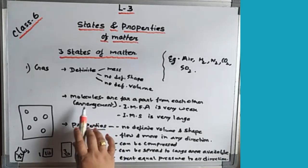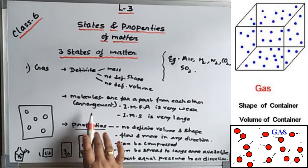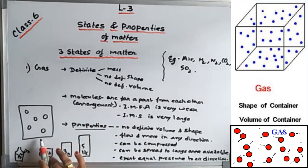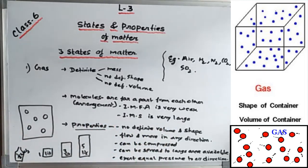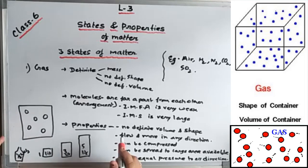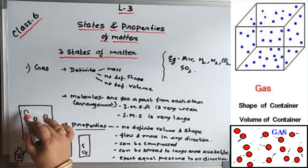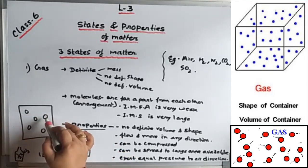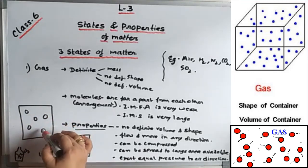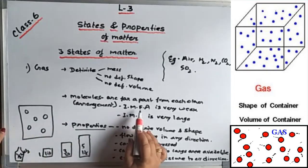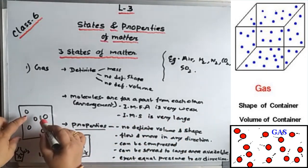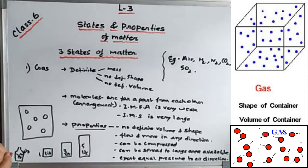Looking at the molecular arrangement of gas: the molecules are lying far apart from each other. The distance between them is very large — the intermolecular force of attraction is very weak because the molecules cannot pull each other when they are so far apart. The intermolecular force of attraction pull is very negligible.